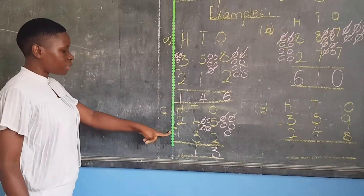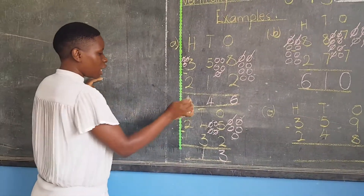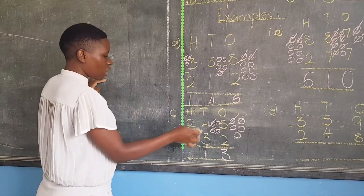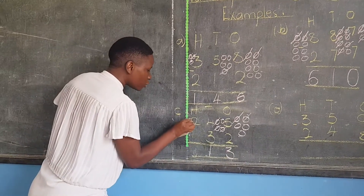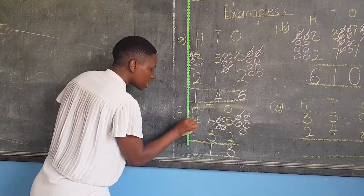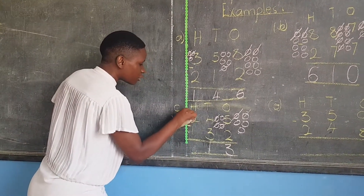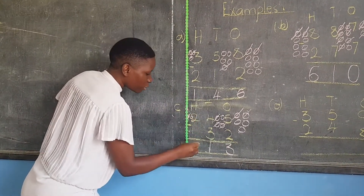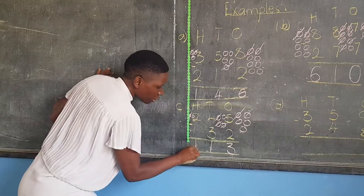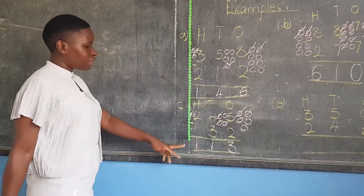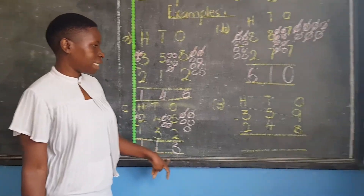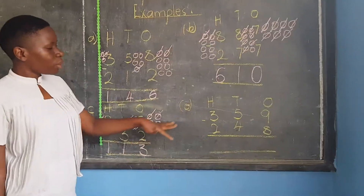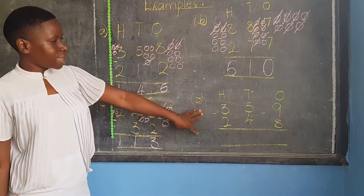Then you come to the last part, saying two, take away one. You draw two balls, then you cancel one and you remain with one. Our answer is one hundred and thirty.